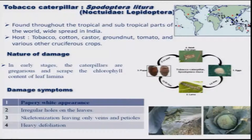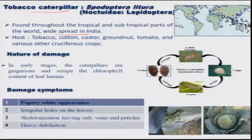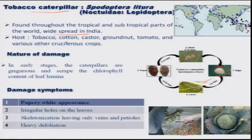The tobacco caterpillar is again a sporadic pest, widely distributed in India, and occasionally causes serious damage to cabbage. The moth lays eggs in groups covered with scales or hairs. The caterpillar initially scrapes the leaves, producing a papery white appearance, and later starts defoliating, which affects the normal growth of the plant.